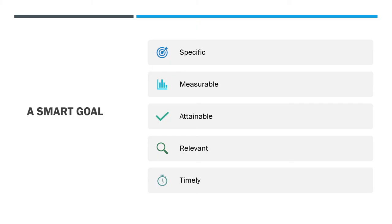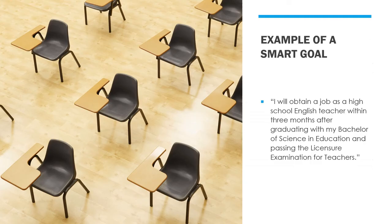A SMART goal must be specific, measurable, attainable, relevant, and timely. This is an example of a SMART goal: 'I will obtain a job as a high school English teacher within three months after graduating with my Bachelor of Science in Education and passing the licensure examination for teachers.'